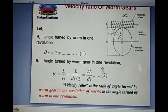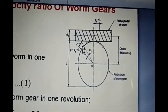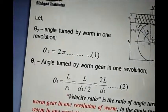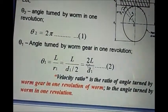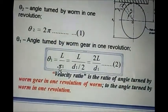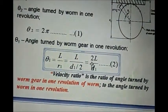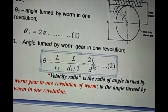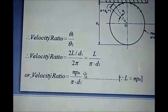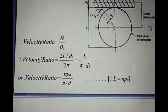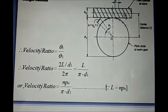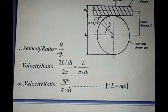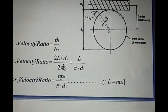See this diagram carefully: the angle turned by the worm gear in one revolution is L divided by R₁, where R₁ is the radius of the worm gear. Substituting R₁ = D₁/2, we get theta 1 = 2L/D₁. The angle turned by the worm, theta 2, equals 2π. So the velocity ratio is theta 1 divided by theta 2, which is (2L/D₁) divided by 2π.